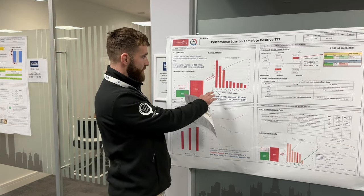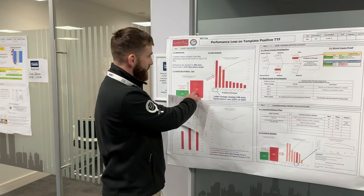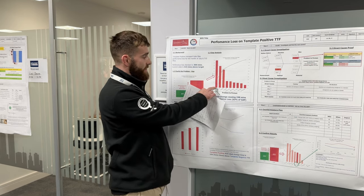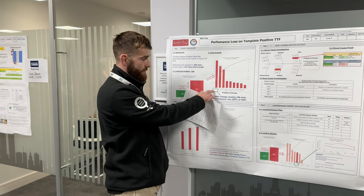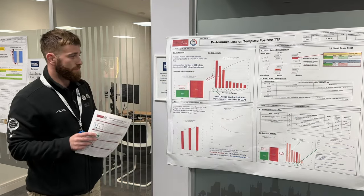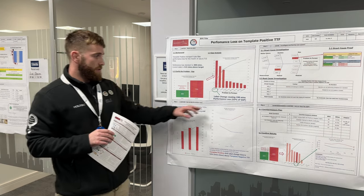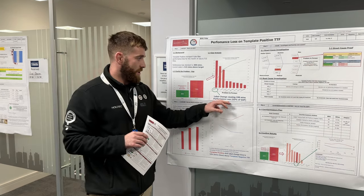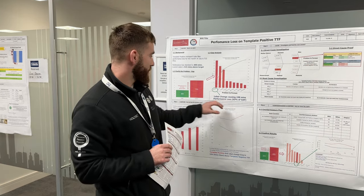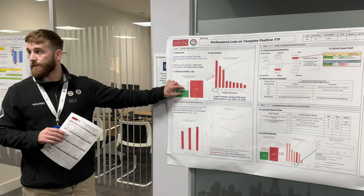I broke that problem down into a Pareto. Out of the 715 minutes, 198 of them were coming from label change, so that was the problem to pursue. Label change was causing 198 minutes of performance loss, equating to 63% of the gap.